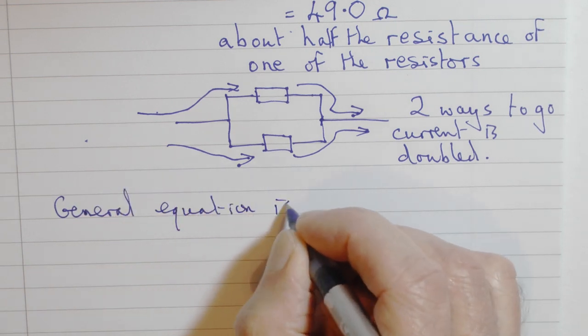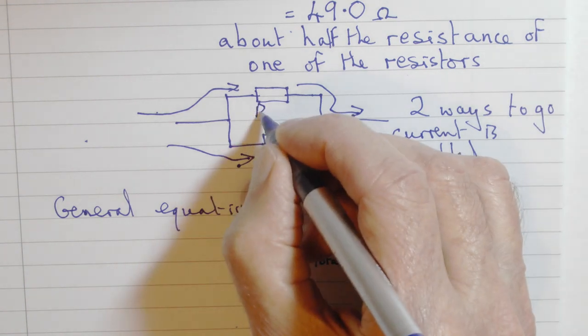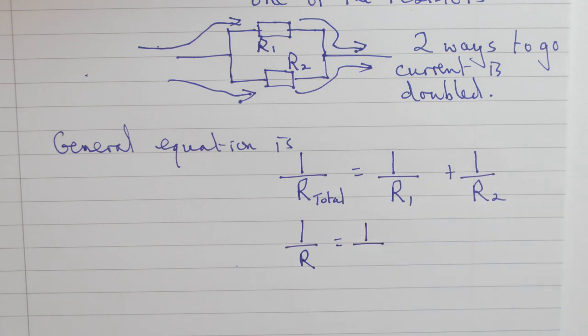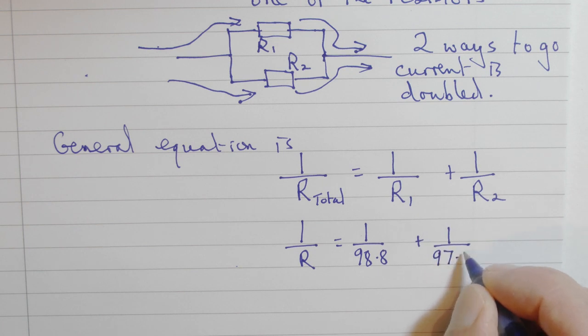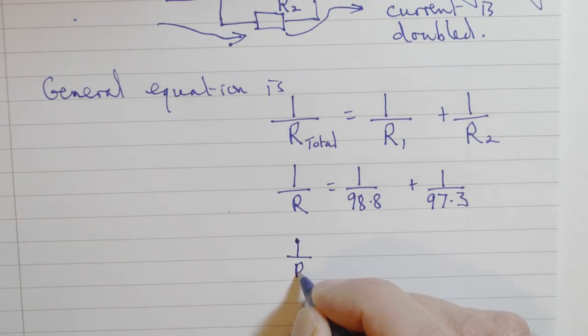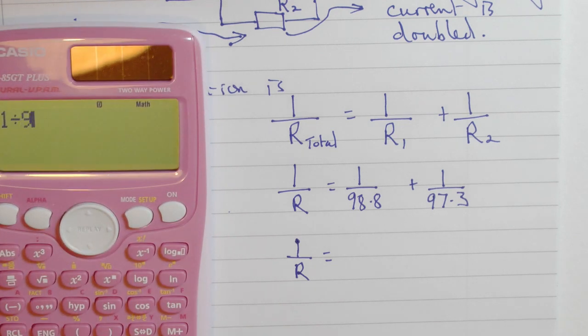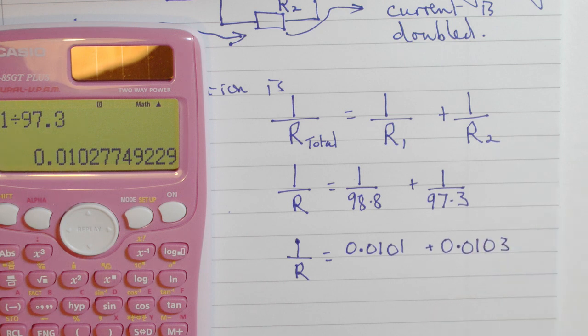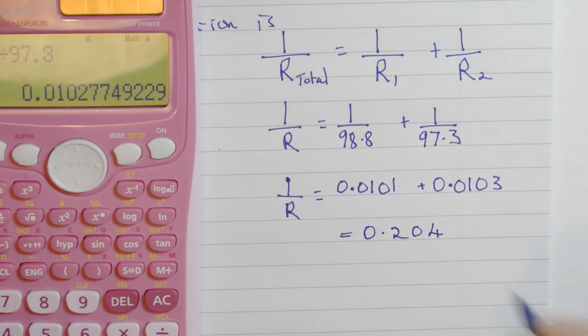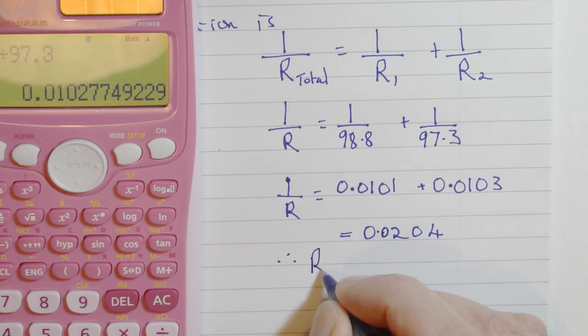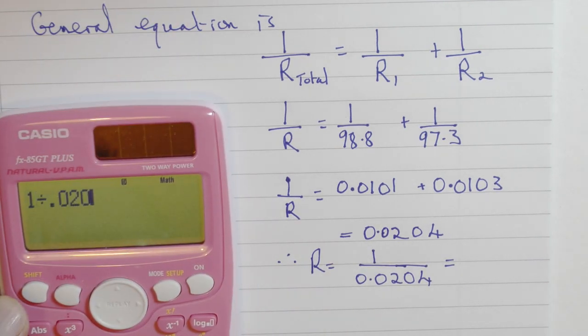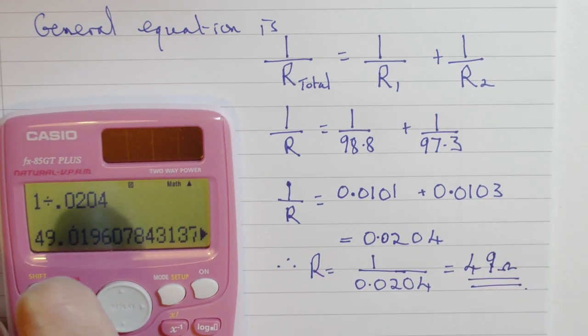Now, there's a general equation here. That one over the total resistance is equal to one over R1 plus one over R2, where R1 and R2 are the individual resistances. As you can see, substituting in the individual results for resistance that we got, we'll evaluate each of those fractions. One over 98.8 is 0.0101 and next 0.0103, adding those together 0.204. The total resistance then is the inverse of that. We're inverting both sides of the equation. And that gives, surprisingly, exactly 49 ohms.